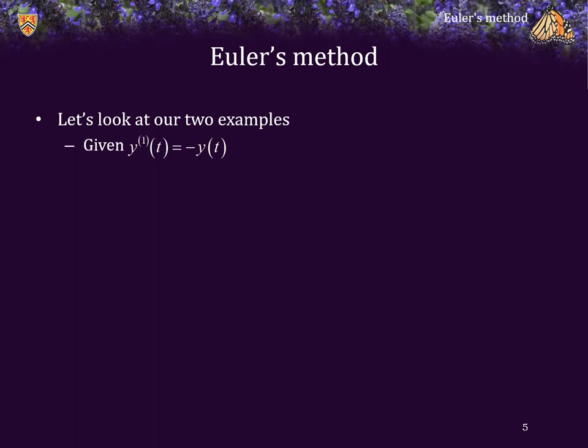Let's look at our two examples. In the first case, the ordinary differential equation is the derivative equal to negative y of t. Consequently, the second derivative is the partial with respect to t of that expression, which is 0, plus the partial with respect to y, which is negative 1, times negative y of t. That simplifies — the second derivative is y of t, because the solution was e to the negative t, and the second derivative of e to the negative t is e to the negative t.